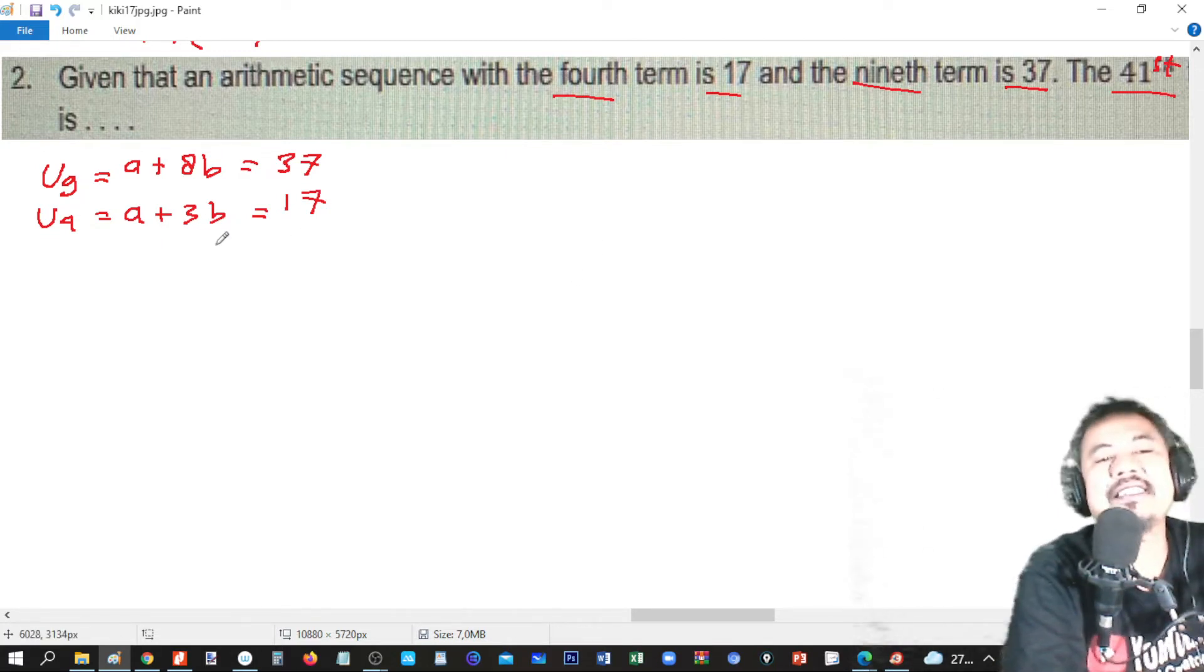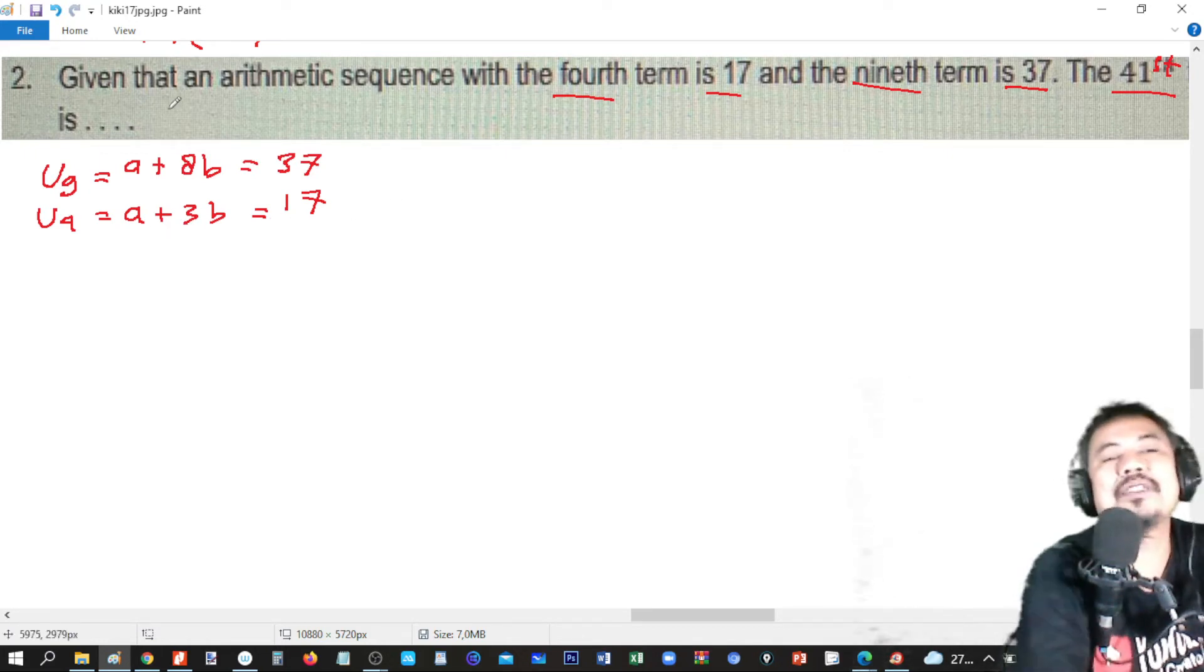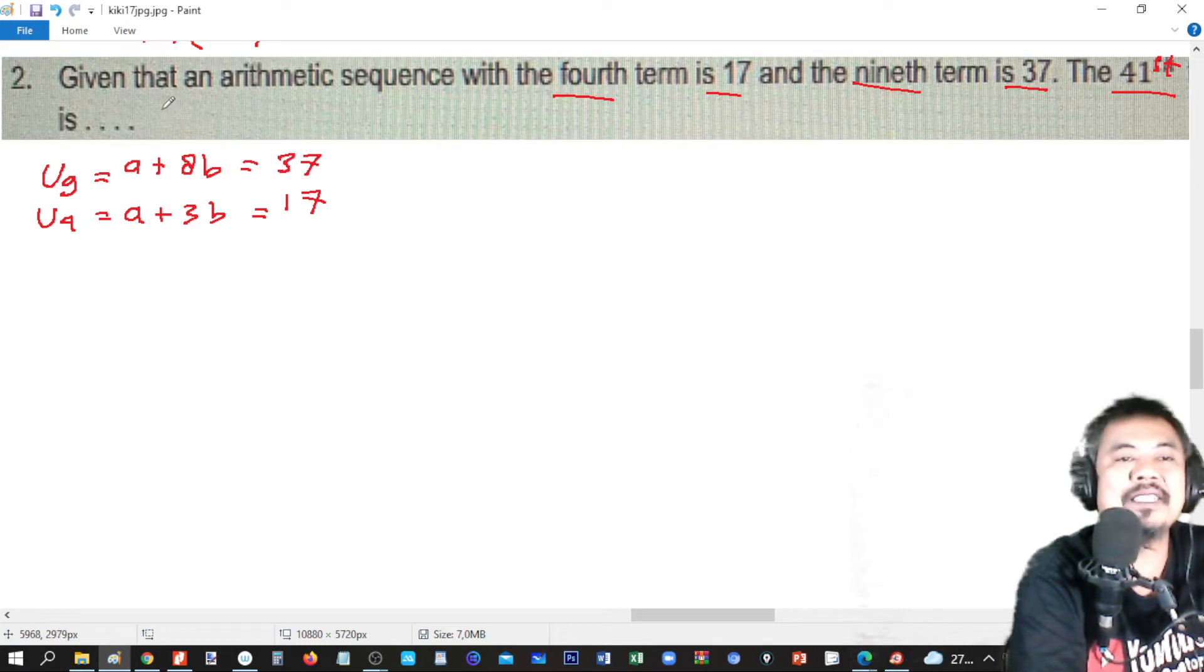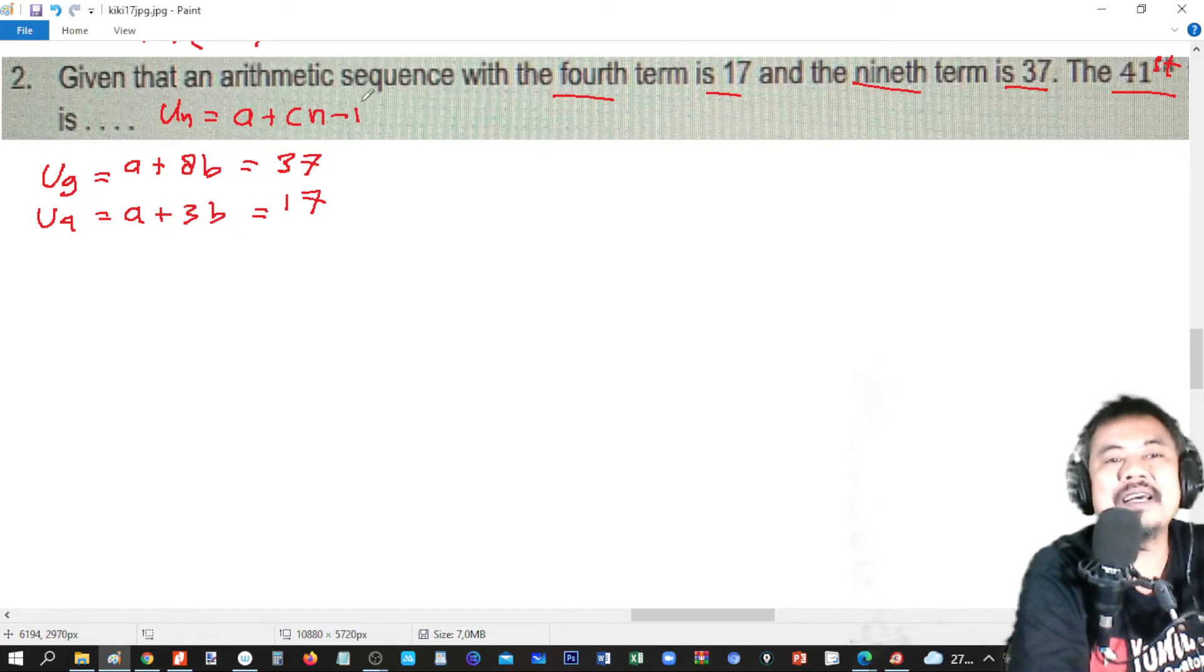The basic sequence is Un equals a plus n minus 1 multiplied by b.